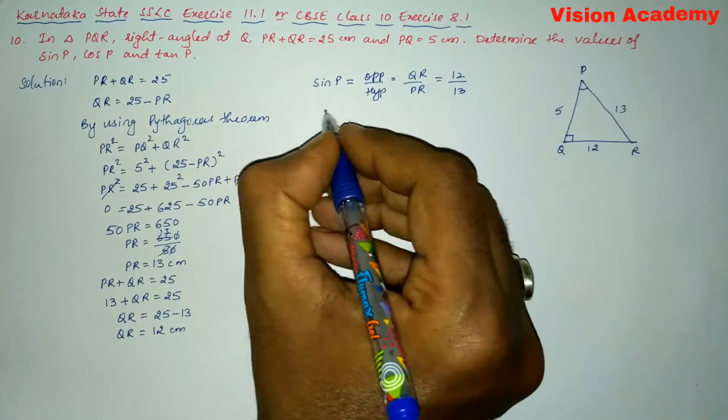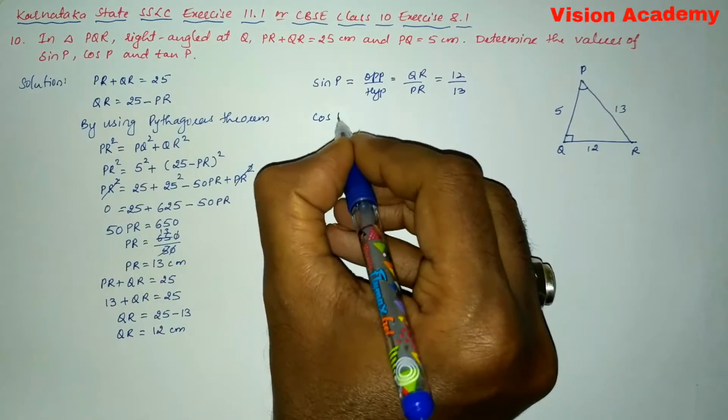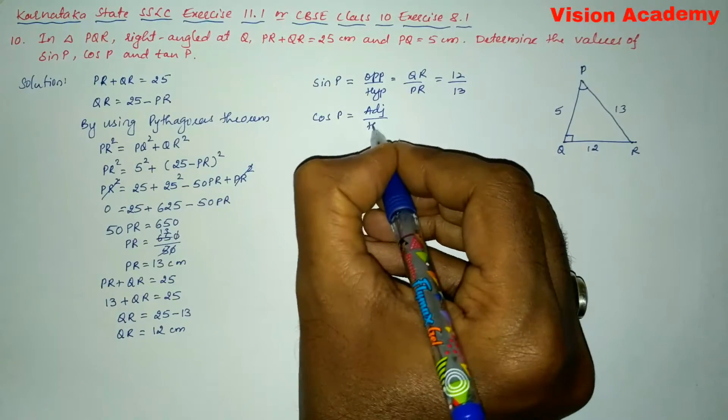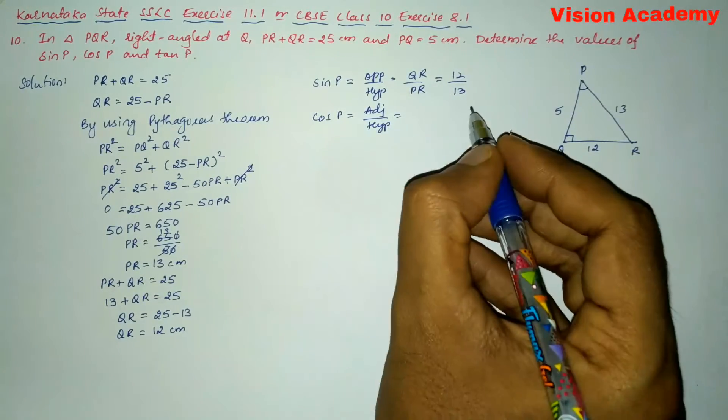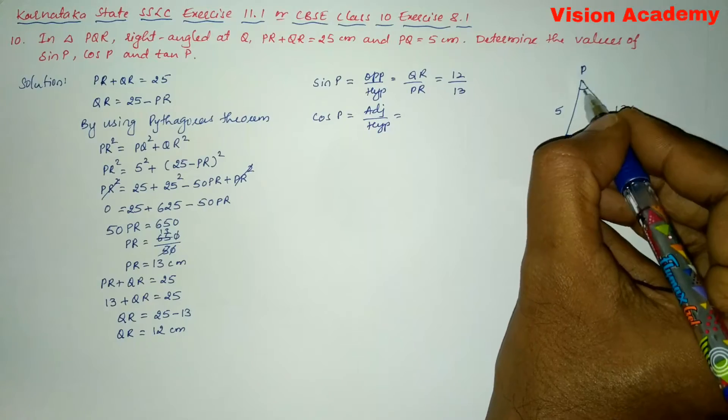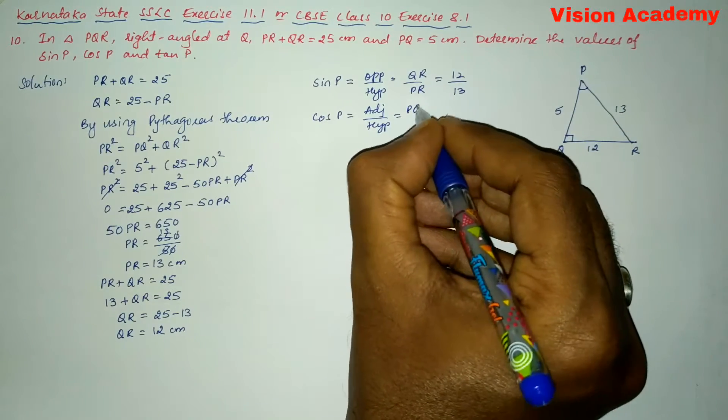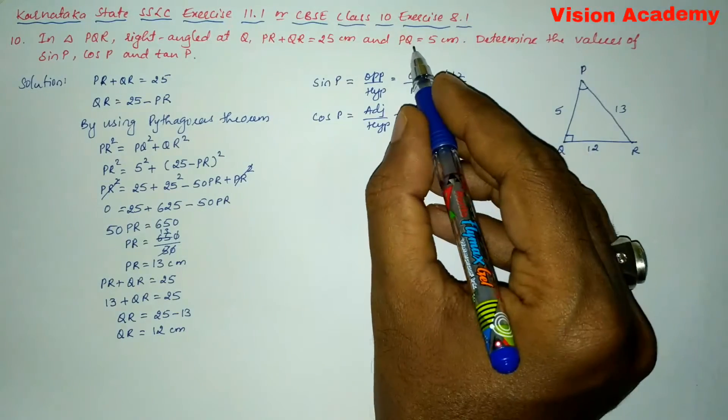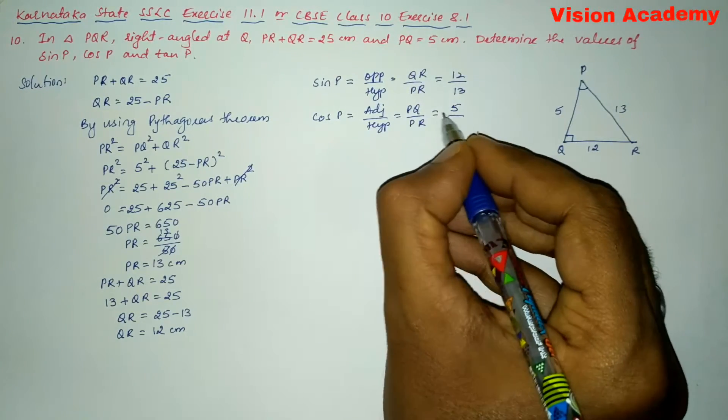Next we will move on to cos P. Cos P is equal to adjacent by hypotenuse is equal to here we will write adjacent to this angle is PQ and hypotenuse is PR. So here PQ is 5 and PR is 13.